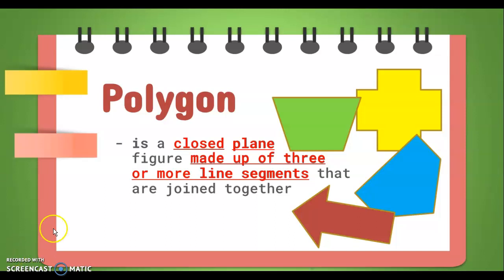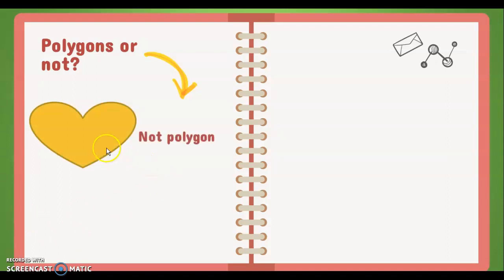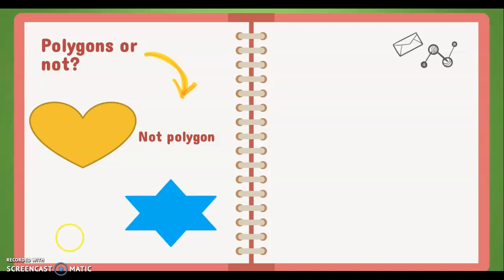Lastly, a polygon is made up of three or more straight sides or line segments. Now let us identify the following figures — are they polygons or not? Number one: if you said this is not a polygon, you are correct. It may be flat and closed, however it is not made up of straight sides. Number two: if you said this is a polygon, you are correct, because it is flat, it is closed, and it is made up of 12 straight sides.